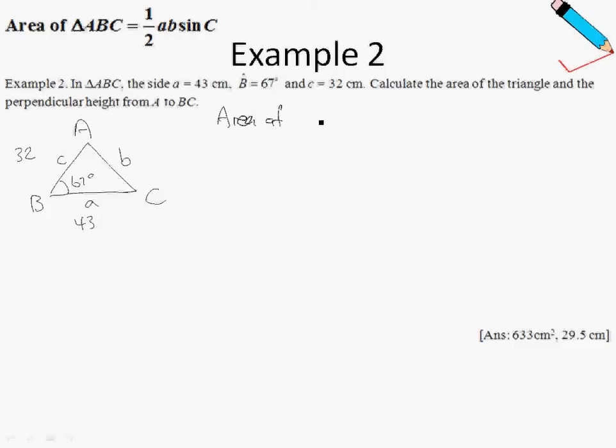Area of triangle ABC is just given by half times the two sides and the angle subtended by the two sides. Let us look at which two sides we're interested in. We'll be interested in side AB, or side C, and side BC. So 32 and 43, and the angle that is subtended by this side and this side is 67 degrees. So sine of 67 degrees. Punch this in your calculator, round it off, you'll get 633 cm² to 3 significant figures.